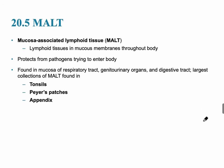MALT stands for mucosa-associated lymphoid tissue. It's regions of lymphoid tissue strategically located where there's a high chance of pathogens entering the body. For example, there are discrete lymphatic nodules in the digestive tract, where harmful bacteria may be present in digested food. Other collections of MALT are found in the tonsils, the Peyer's patches in the small intestine, and the appendix.